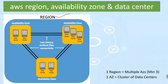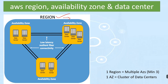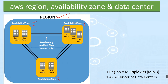Let's understand the AWS region, the availability zone, and the data center. In AWS, a region is a physical location around the world where they keep a group of data centers. Each region consists of multiple isolated and physically separated availability zones. For example, the Mumbai region has three availability zones. Inside the availability zone, Amazon keeps the data centers. AWS has 25 regions around the world, and six more are going to open shortly.